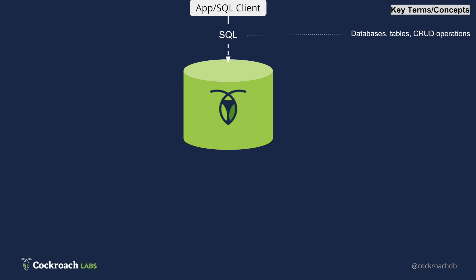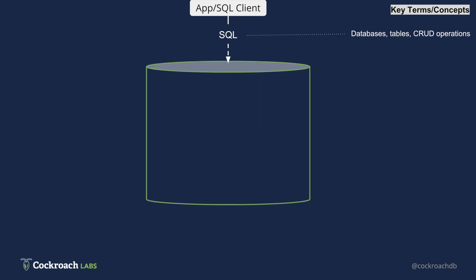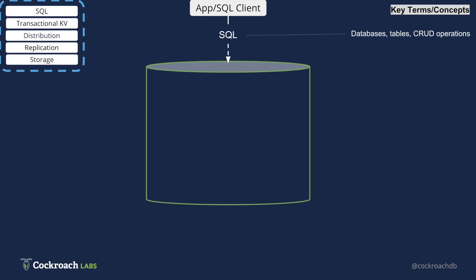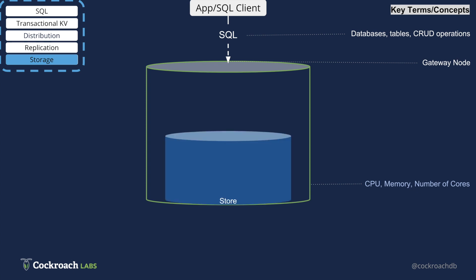Now let's look under the hood and zoom in a bit. The node that the app or client connects to is called the gateway node, and the machine that the CockroachDB node runs on has characteristics like CPU, memory, and number of cores. Under the hood, CockroachDB is in fact a key-value store, and the key-value store we use is RocksDB.